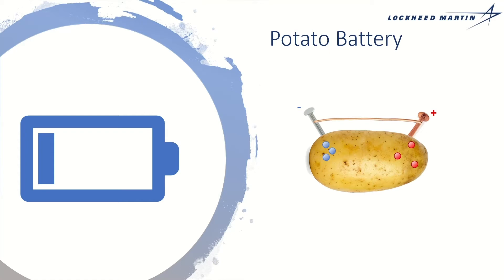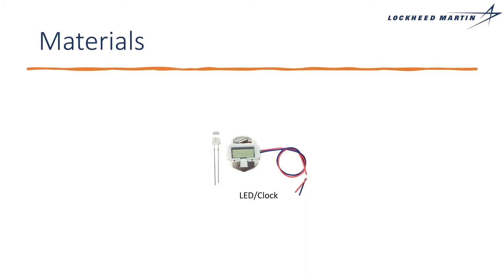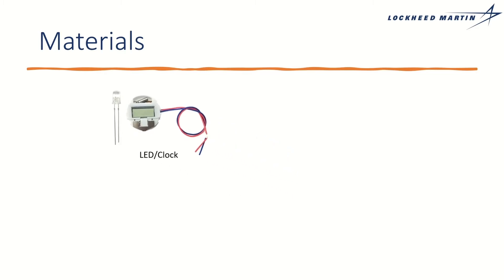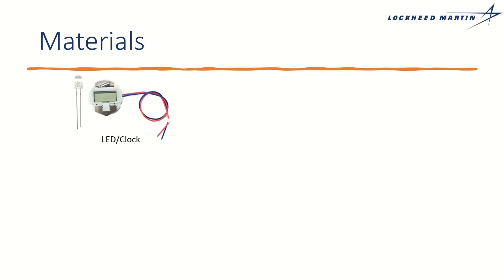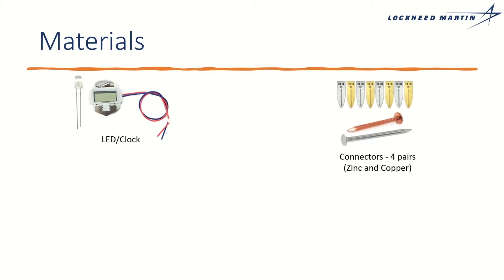Oranges, apples, pineapples, even soda will all work as batteries. So knowing what we know now about circuits and electricity, let's run through our materials list, starting with our LED light bulb and clock we're going to use to test the system out. You can use either one of these, and I'll be using both in the experiment to show you how to set them both up. Then we have our connectors — we need a zinc connector and a copper connector for each battery. You can use nails, or you can use tabs, which are what I'll be using in the experiment.